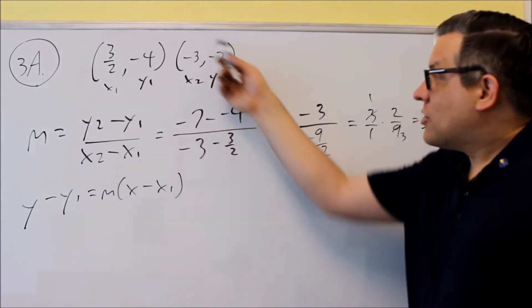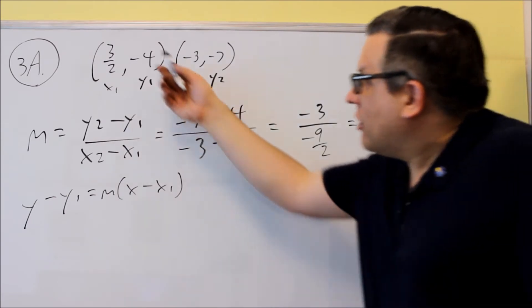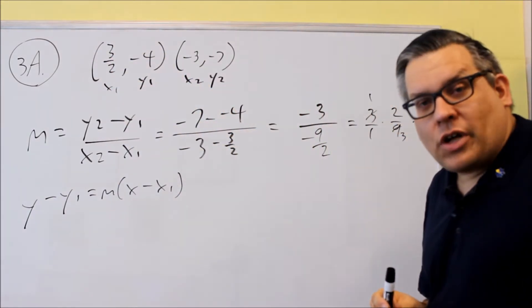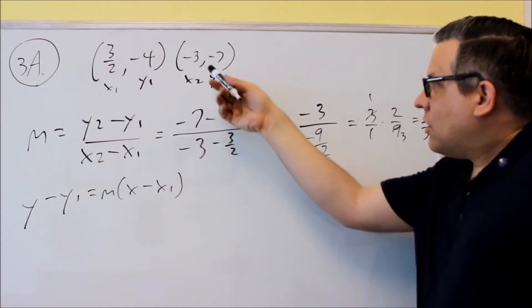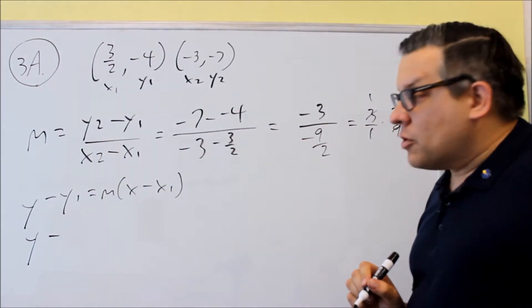To avoid using fractions, I'm actually going to use the second one instead, and you should get exactly the same answer as if you tried it out with the 3 halves. So let's put in negative 3 and negative 7. So once again on this, make sure you plug in the correct numbers.